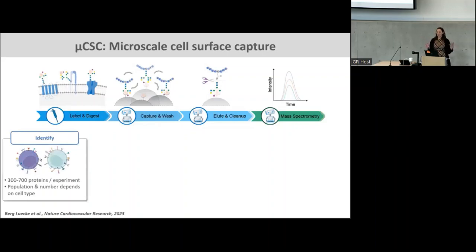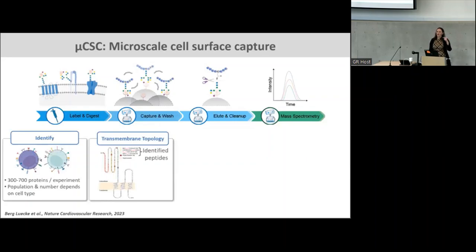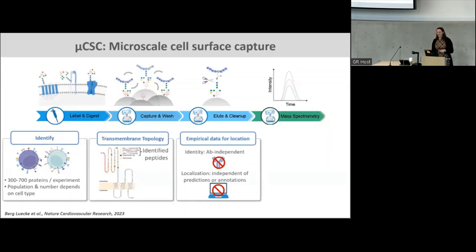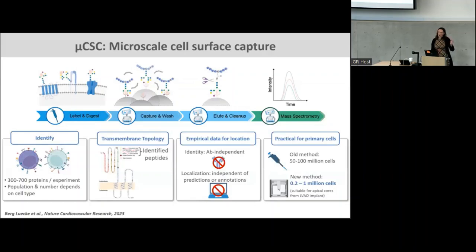What this allows us to do — without having any antibodies — is start with cells and identify usually 300 to 700 proteins that sit at the surface of the cell. The number depends completely on cell type. Not only do we get the identity of the protein, we also identify where the protein is glycosylated, and from that we can infer which part sits in the extracellular domain — really important if you want to develop antibodies or drug targets in the future. While our old method required 50 to 100 million cells, we've completely automated this workflow and done a lot of re-engineering, and now we only need a few hundred thousand or a million cells. So this is well suited to when we get an apical core from an LVAD — we can split it into a few different aliquots for different applications.